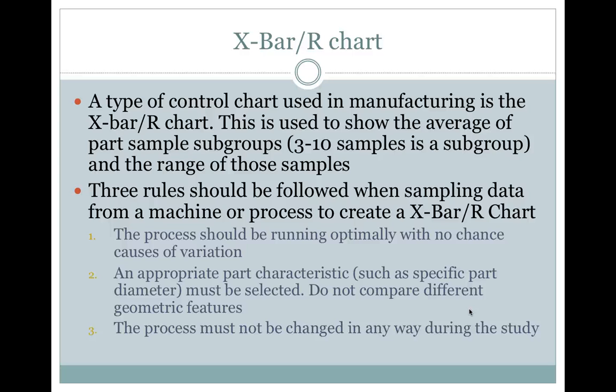Number one, the process should be running optimally with no chance causes of variation. Number two, an appropriate part characteristic, such as a specific part diameter, must be selected. Do not compare different geometric features. And number three, the process must not be changed in any way during the study.